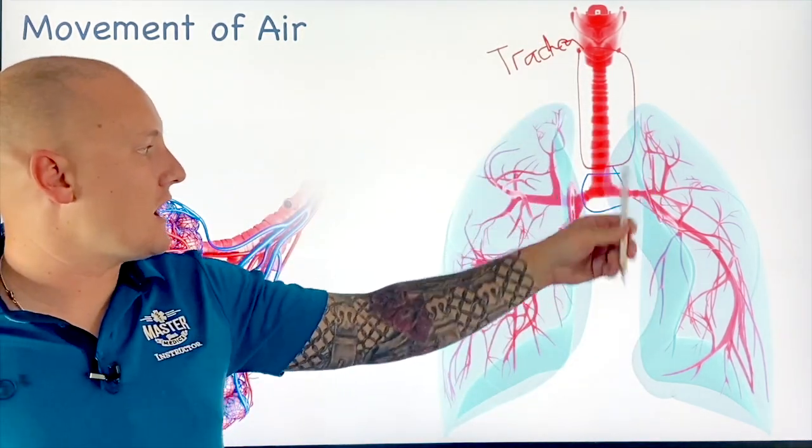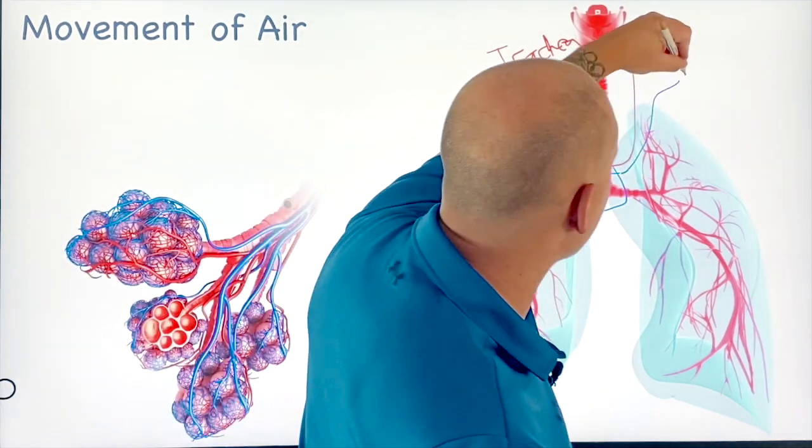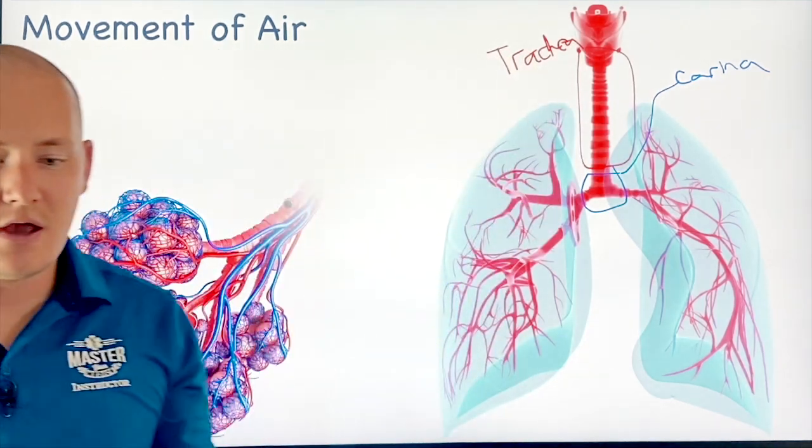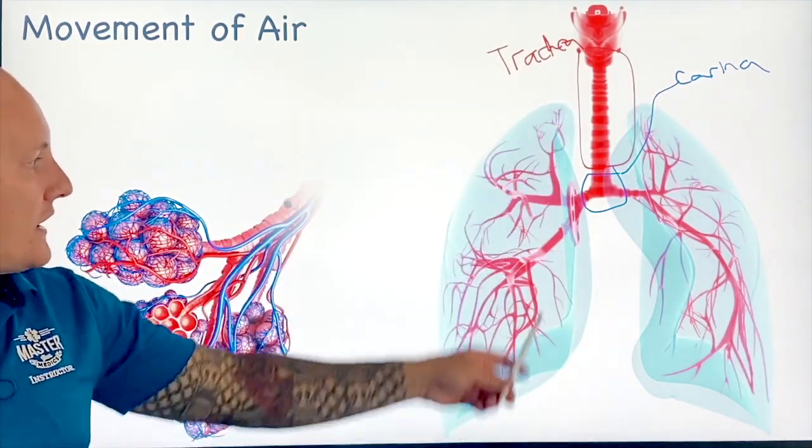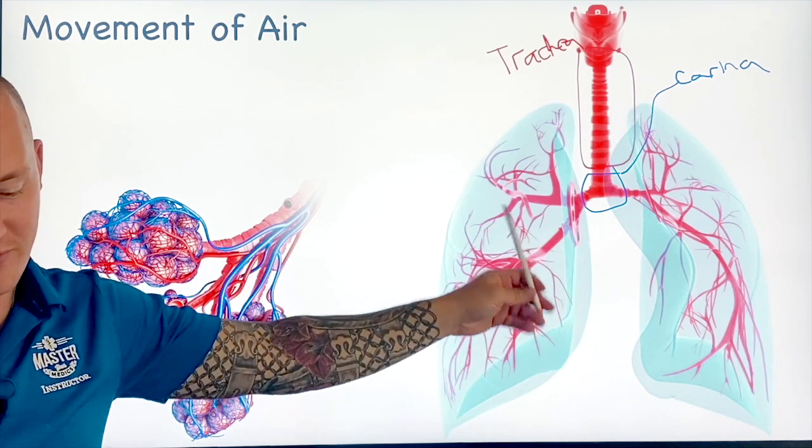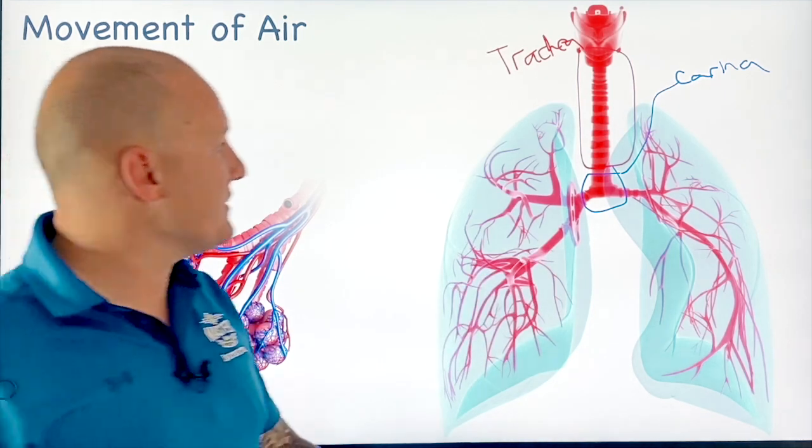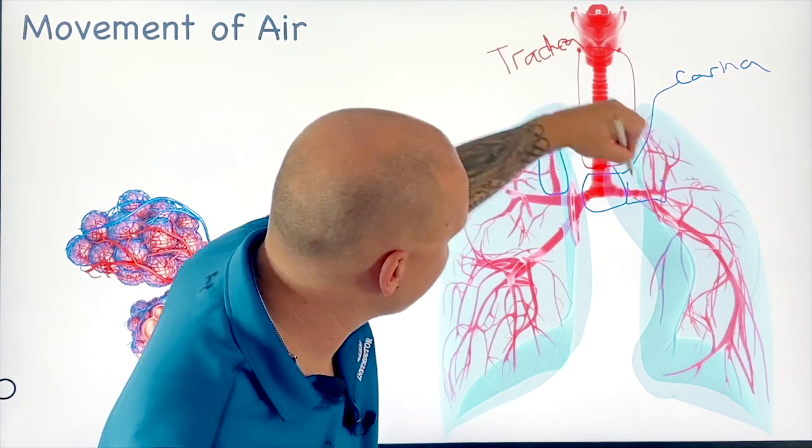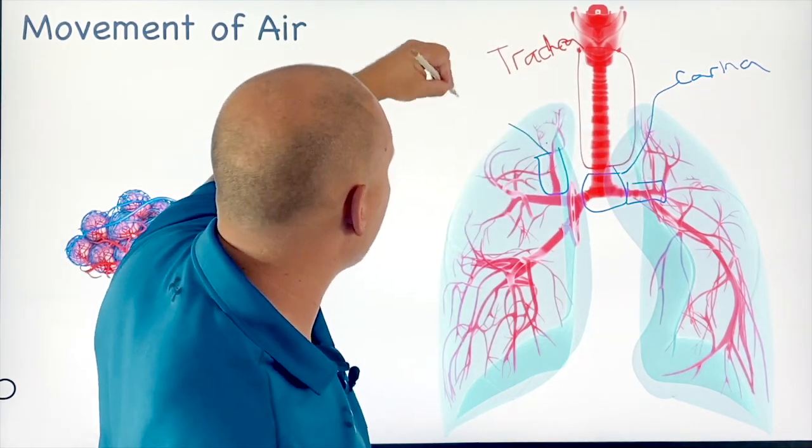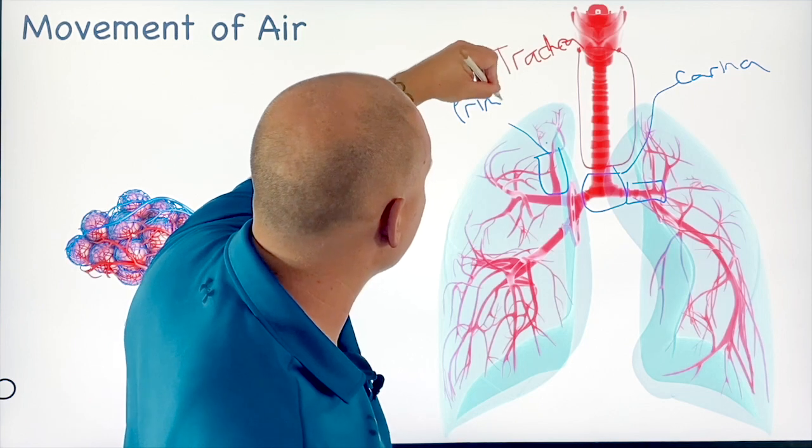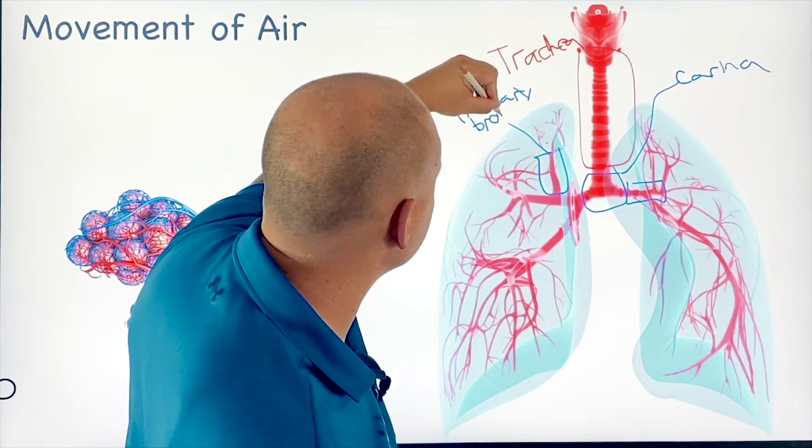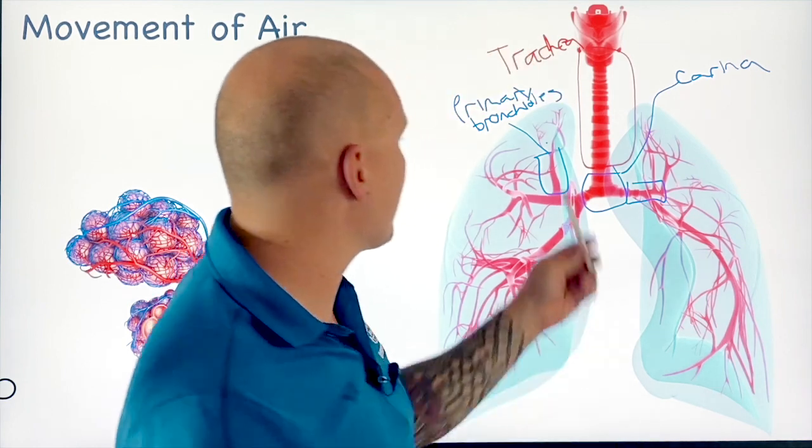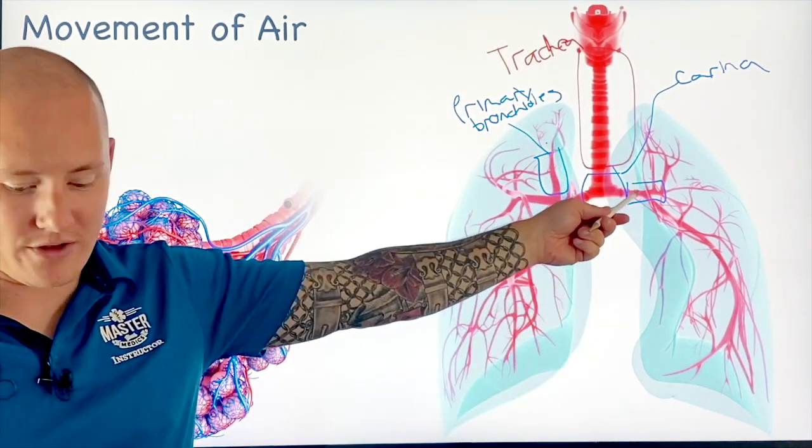Then this guy here, right at this cross when it goes to the right and the left lung, this is called the carina. And then from there we go into the actual bronchioles themselves. So we have these big bronchioles here, these massive ones. Those are called your primary bronchioles. Your primary bronchioles, these are your main ones right here.